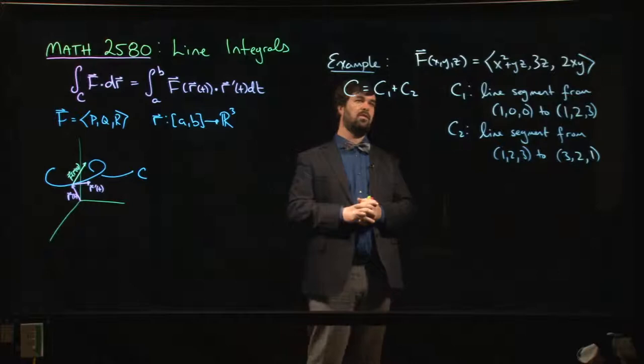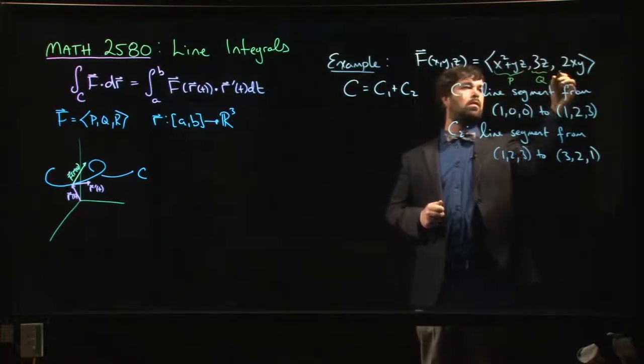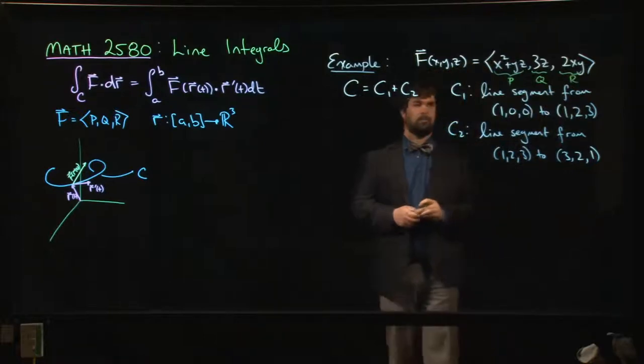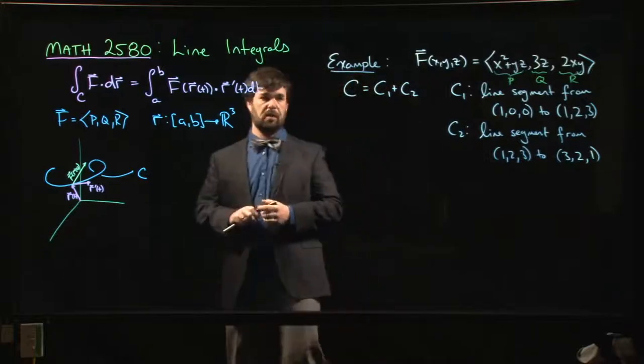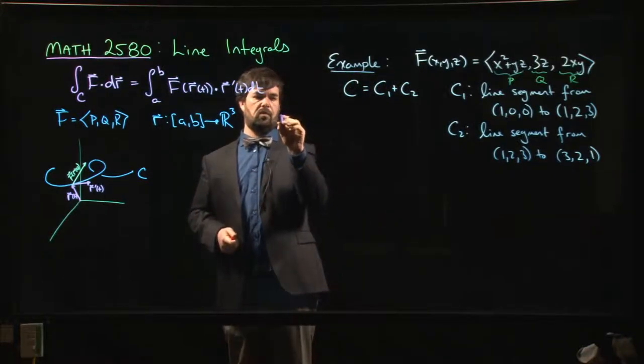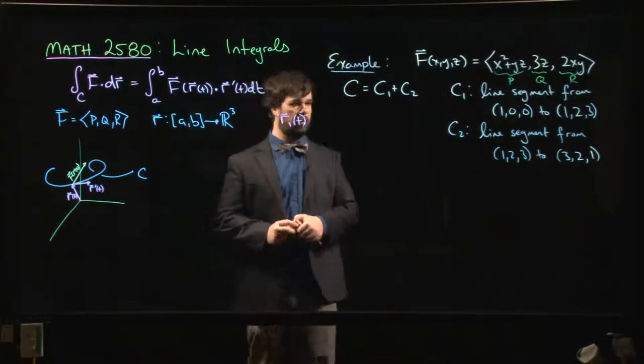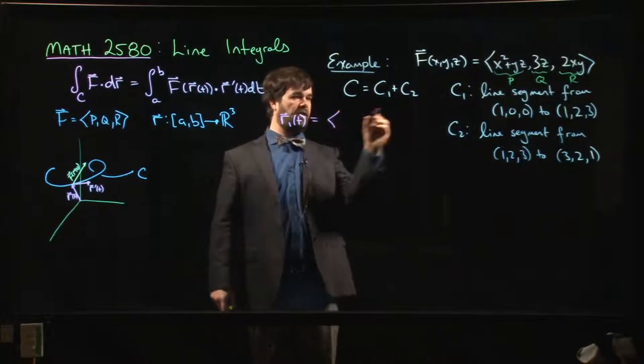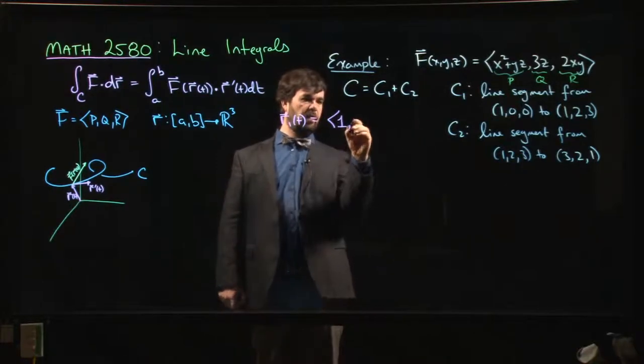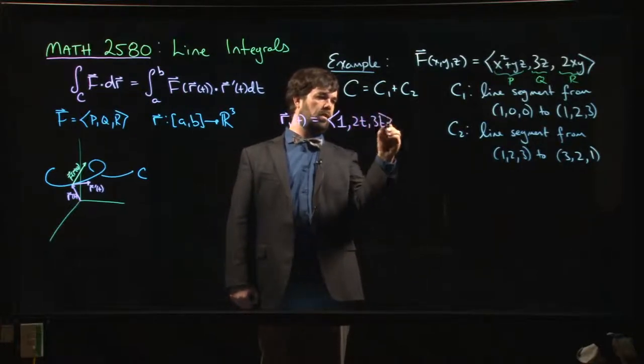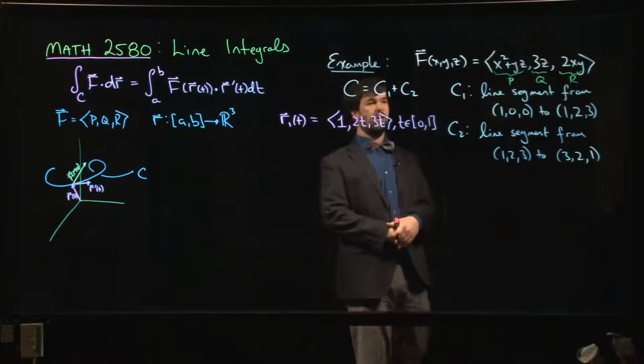Here's an example. We've got a vector field F with components P, Q, and R, and we've got two line segments. The first thing we need to do is parameterize these line segments. For the first one R1 of t, sometimes you can eyeball these. X stays constant at 1 the whole time, y goes from 0 to 2, z goes from 0 to 3, so if we did 1, 2t, 3t with t between 0 and 1, that's going to do the job. It starts at 1, 0, 0 and ends at 1, 2, 3.